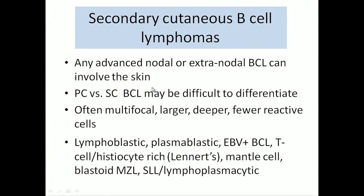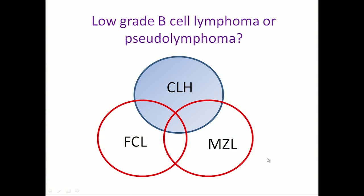We have primary cutaneous and secondary cutaneous B-cell lymphomas. Any advanced nodal or extranodal B-cell lymphoma can involve the skin. Sometimes it may be difficult for the pathologist or clinician to know whether you are dealing with a primary or secondary cutaneous lymphoma. In general, secondary cutaneous are multifocal, larger, deeper, with a more pure population of tumor cells. Any subtype of systemic lymphoma has been reported in the skin.